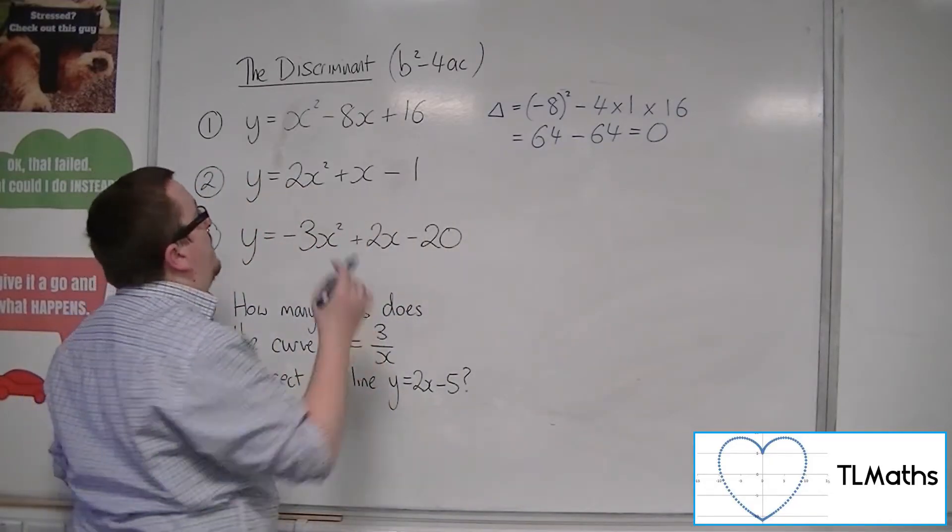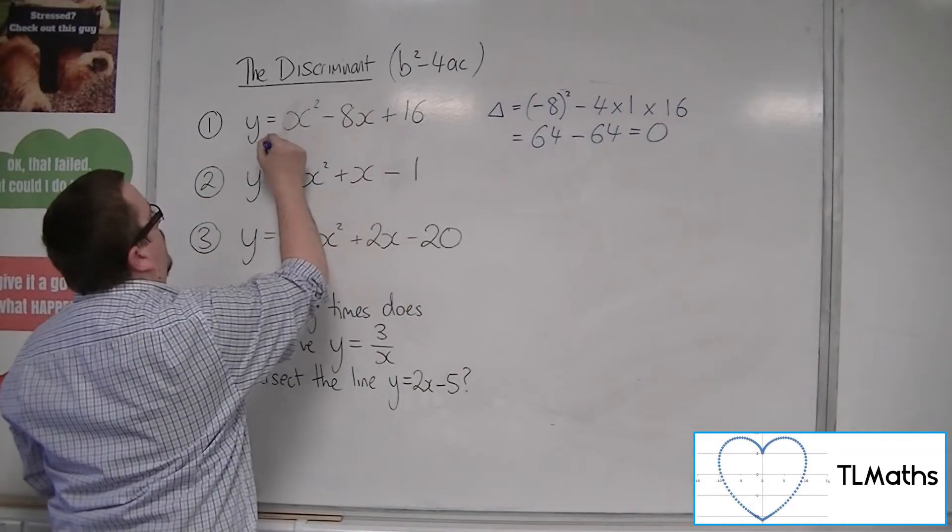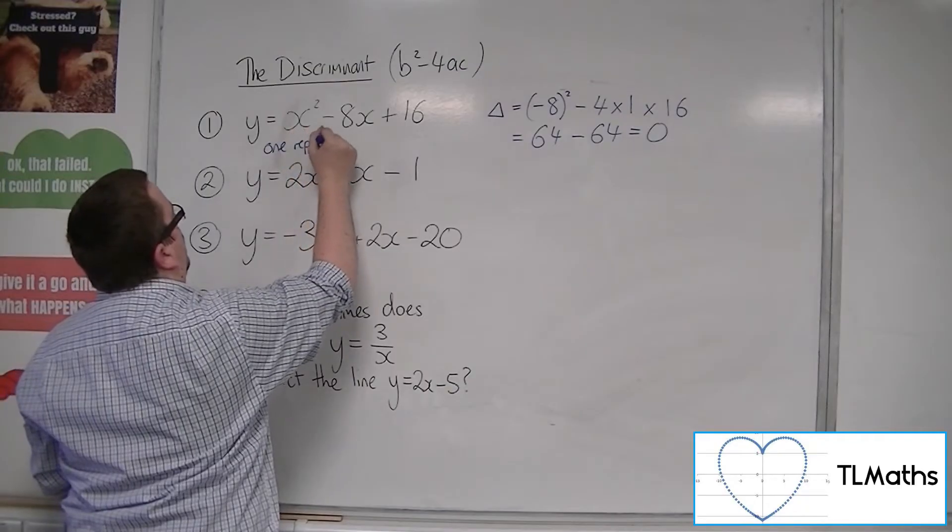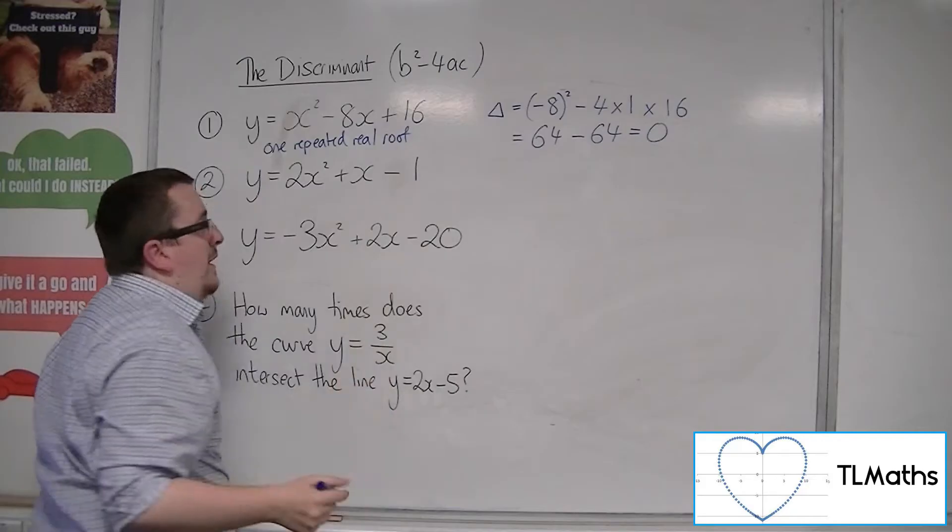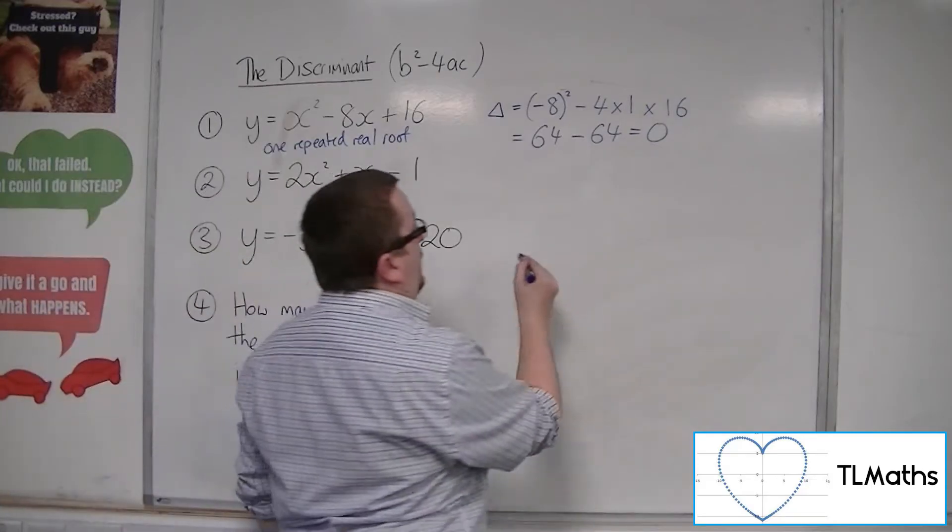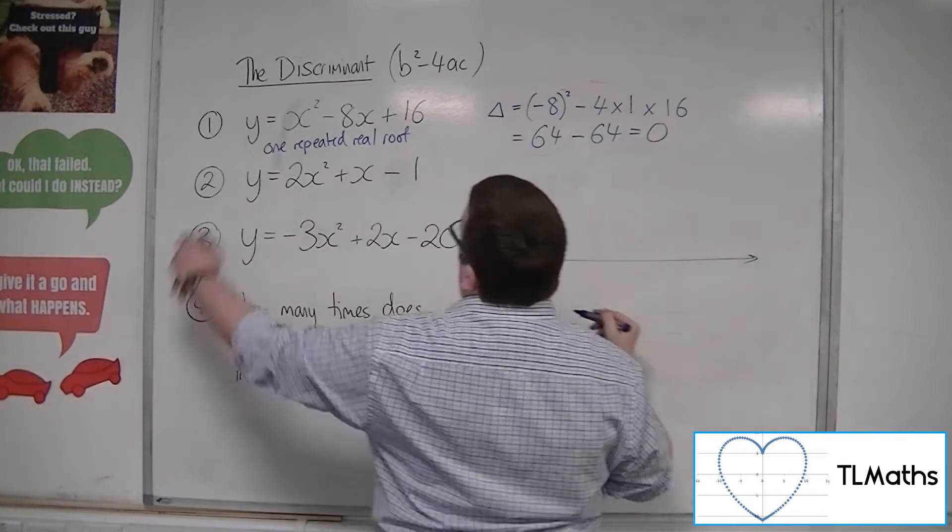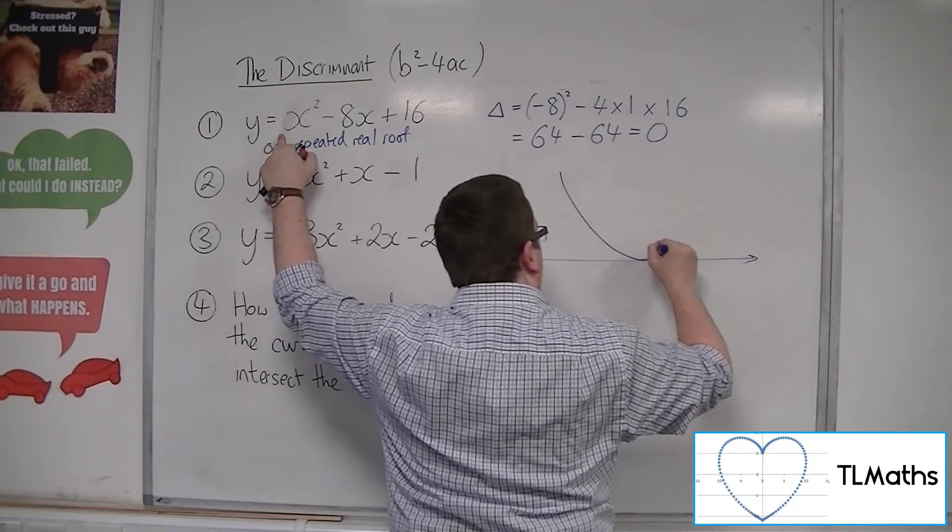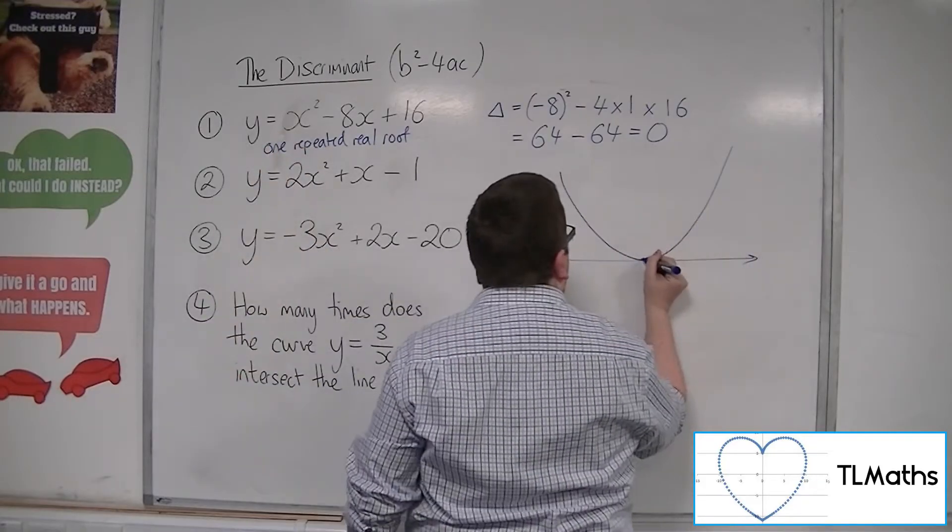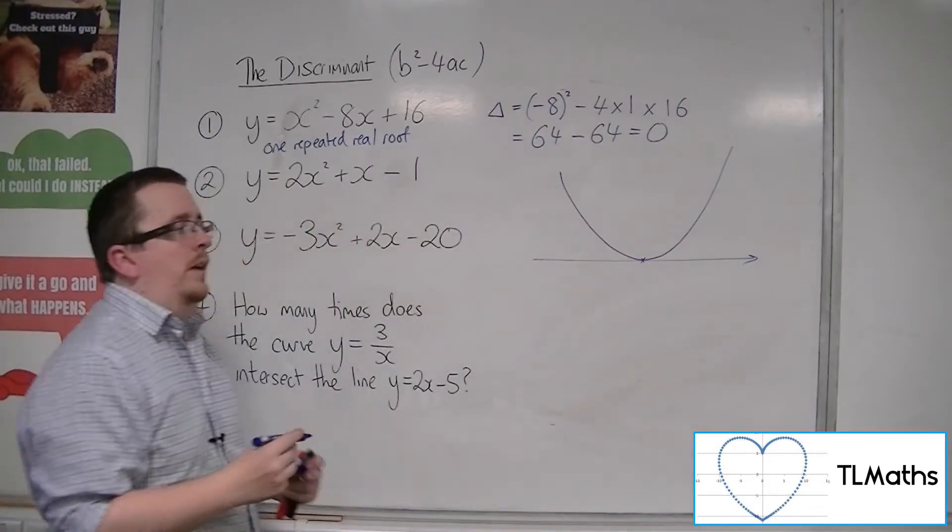So we have, in this case, one repeated real root. So what that's telling me is that this is a curve. It's got a positive x squared. It's a curve that will just sit on the x-axis at a point.